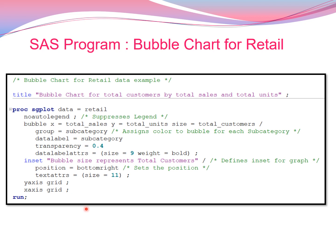I'll write the title as 'Bubble size represents total customers.' The inset statement allows you to write something inside the chart or graph. This inset statement also has advanced features — we continue by writing the title and using the backslash. It's very important to use this backslash, otherwise these options will not work.